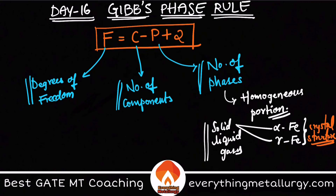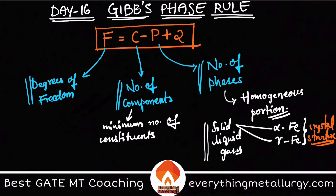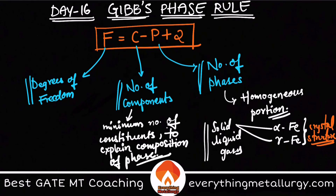Now let's discuss components. A component of a system tells you about the minimum number of constituents by which you can describe the composition of each phase present at equilibrium. The number of components is the minimum number of constituents needed to explain the composition of each and every phase in the system at equilibrium.